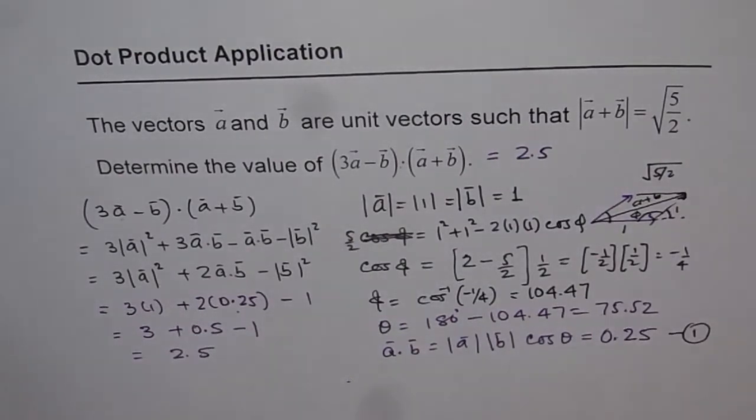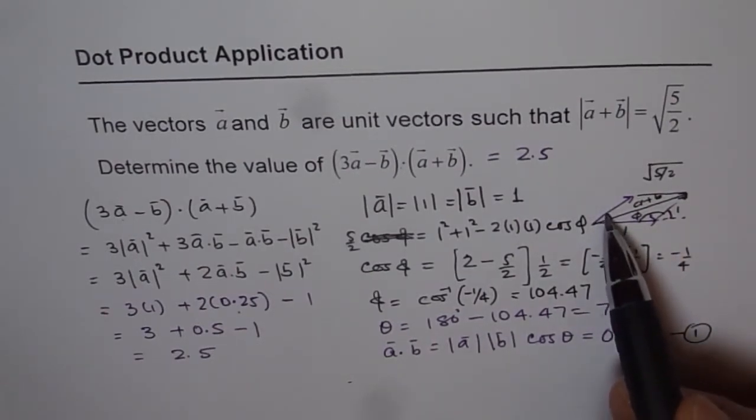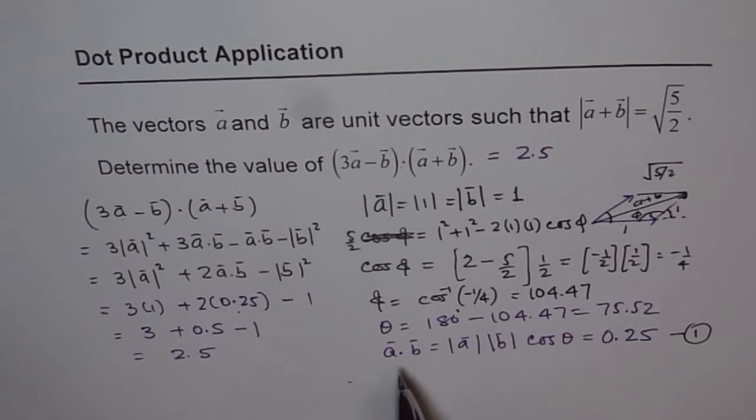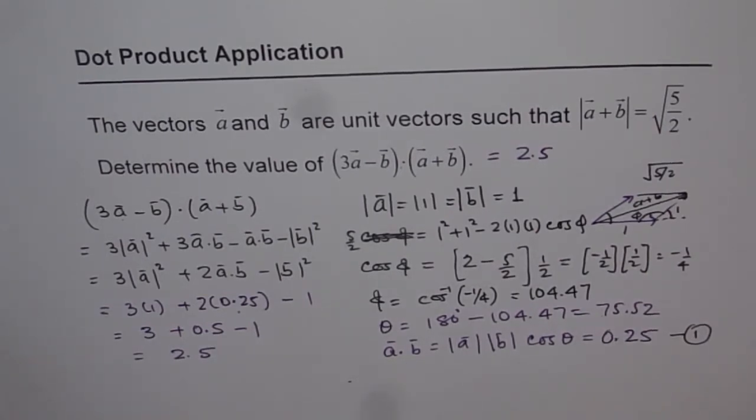So that is how this question is to be solved. It is a very interesting question. Go through it once again. See what we have done to find the angle between A and B. And then you know the dot product of A and B, and only then you can get your answer. I hope you appreciate it. Thank you and all the best.